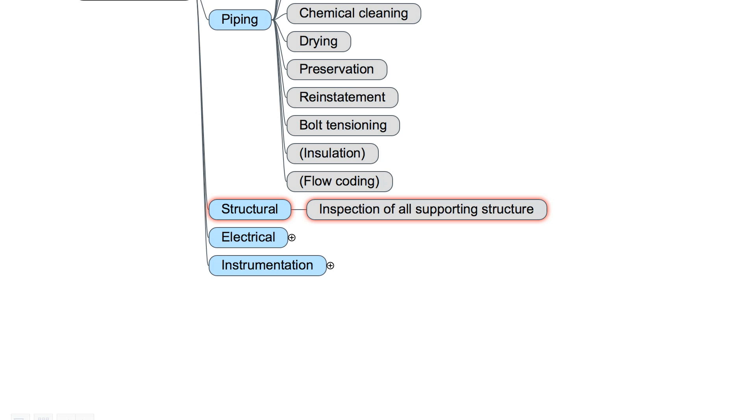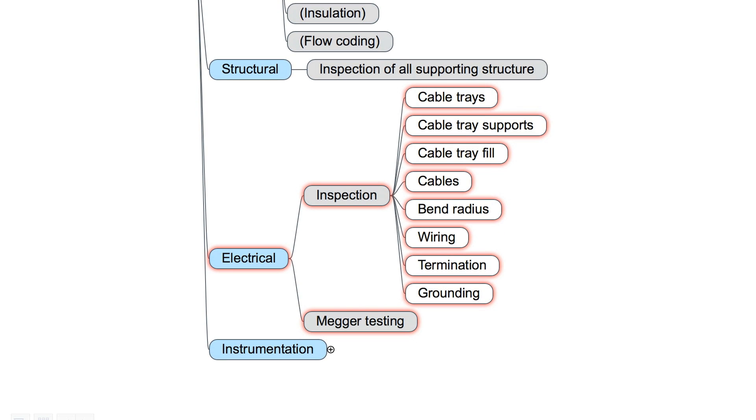The inspection of all supporting structure is the typical task for the structural discipline. Electrical. We have to inspect cable trays, cable tray supports, the cable tray fill, the cables itself, the bend radius of the cables, the wiring, the termination and the grounding and, for sure, mega testing.